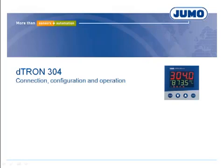This video shows important details for commissioning of a compact controller using the controller series D-Tron 300 as an example. The controller is available in different dimensions. We will use the D-Tron 300 4, size 96x96 mm as an example. We would like to inform you about connection, configuration and operation of the device as two-state controller and as continuous controller.